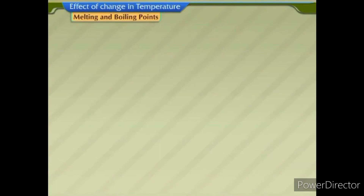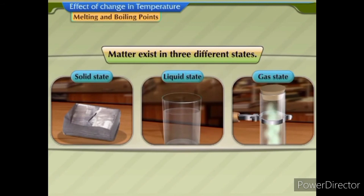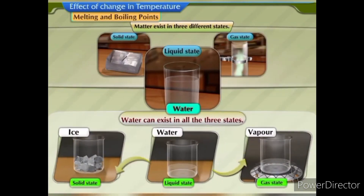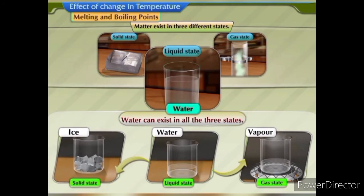Melting and boiling points. We know that matter exists in three different states — solid, liquid and gas. We also know that the same matter can exist in all three states under different temperatures. The most familiar example is given by water. Water can exist in all three states. When converted into ice, water goes into solid state, and when converted into vapour, it goes into the gaseous state.